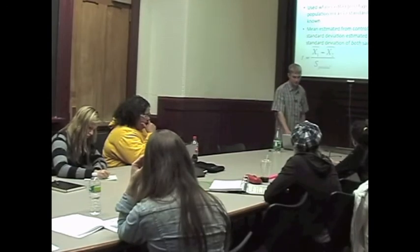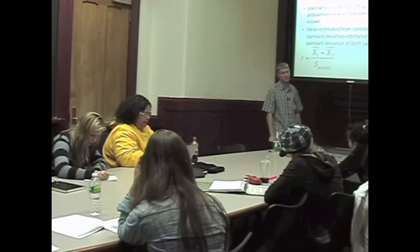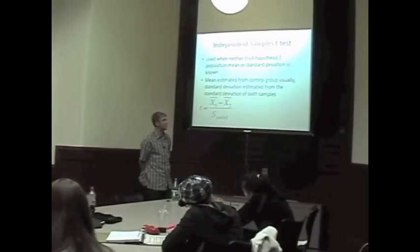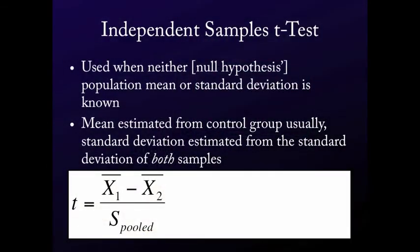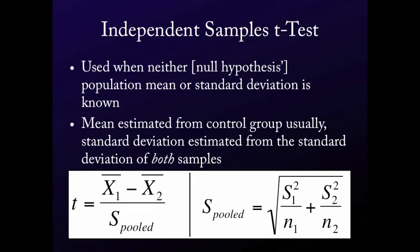So the only difference here between the last one, there's two differences. One is notice that mu is now replaced by the mean of group two, your control group, right? And notice that in the bottom, we have s pooled. s pooled variance is calculated by basically crunching together the variance from both of your samples. Does that make sense?